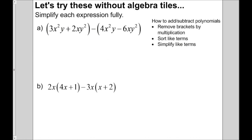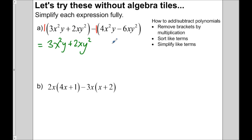Let's try some things without algebra tiles. The steps are: remove brackets by multiplication, sort out the like terms, then simplify. In this example, there's an invisible 1 in front. So 1 times 3x squared y is just 3x squared y, and 1 times 2 is 2xy squared — multiplying by 1 changes nothing. Here it's a negative 1: negative 1 times 4 is negative 4 x squared y, and negative 1 times negative 6 is positive 6xy squared.